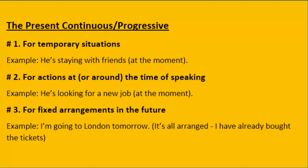Use number two: we also use present continuous for actions at or around the time of speaking. For example: 'He is looking for a new job at the moment' means he is still in search of a job. Similarly, right now I am talking to you, I am explaining tenses, you are sitting, you are listening to me, you are watching this video lecture — all these actions are happening at the time of speaking.